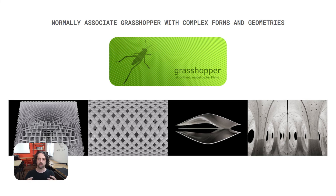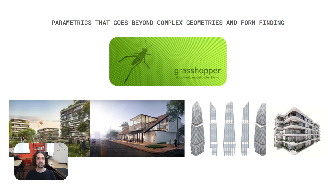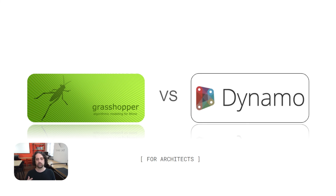The thing that needs to change is a little bit about our mindset, because we always associate Grasshopper with very complex forms and geometries — nearly unbuildable projects. What I'm advocating is parametrics and computational design that goes beyond complex geometries and form-finding, using these tools and processes with Rhino, Grasshopper, and Rhino Inside all linking through to Revit via its API. We can develop our normal pieces of architecture, and this can extend what we do as architects in a general sense.